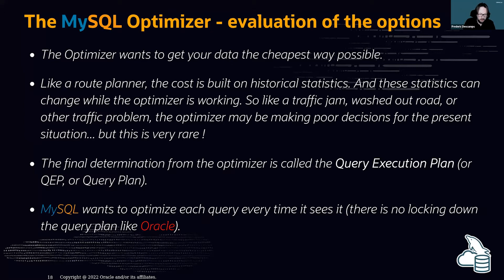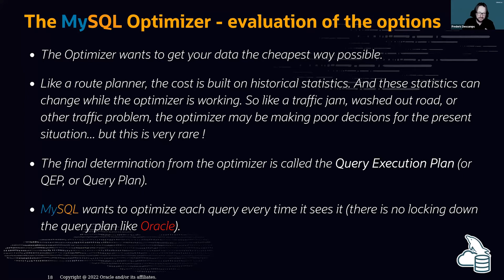The goal of the optimizer is to get the data the cheapest way possible — exactly like a route planner, or as we call it in Europe, a GPS. The cost is built on historical data and statistics that can change while the optimizer is working. Just like a traffic jam appearing, the optimizer can occasionally make a poor decision, but this is very rare.